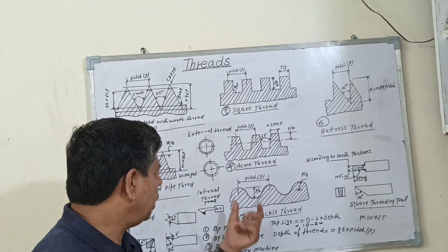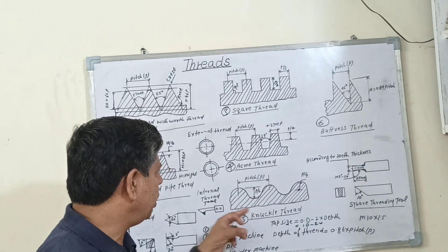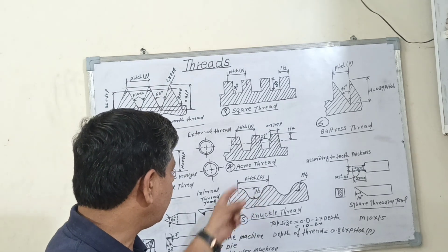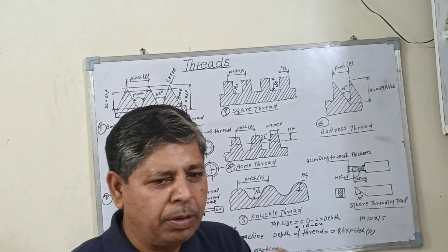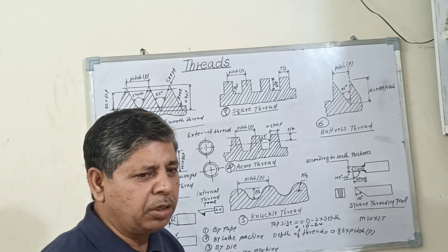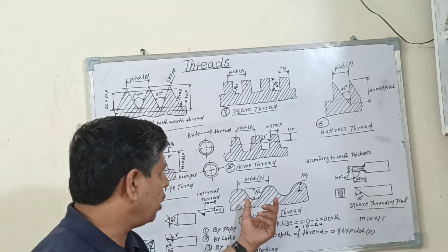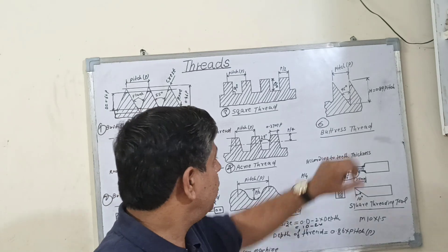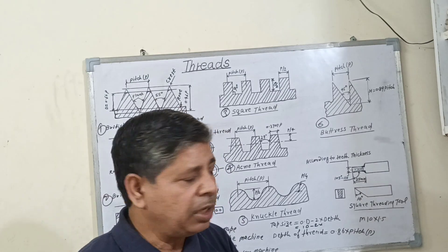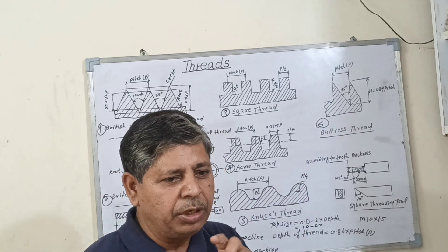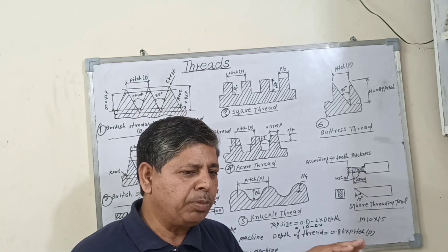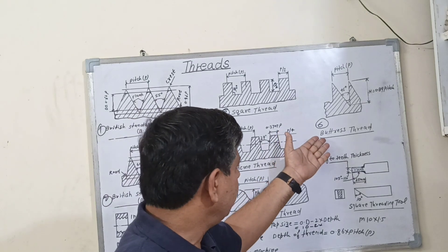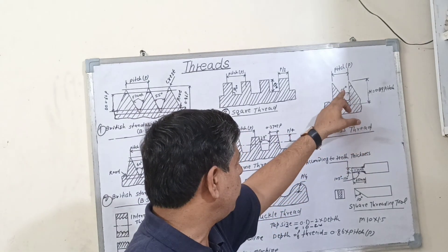Fifth is Knuckle thread. The knuckle thread is also a modified form of the square thread. The top portion is round and the bottom portion is also round. This type of thread is used for bottlenecks and the carrying compartment of the railway, and also for the bench vise spindle. The sixth number is Buttress thread. Buttress thread is used to transmit power in only one direction — used for a bench vise spindle, a ratchet gear, and to give motion to the table of a shaper machine on a cross rail. This type of thread uses 45 degrees.